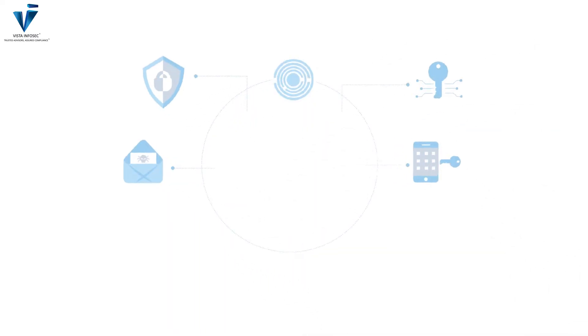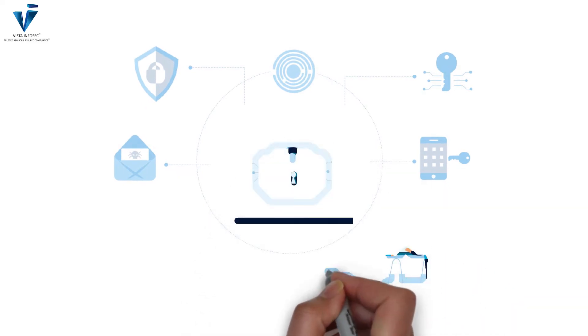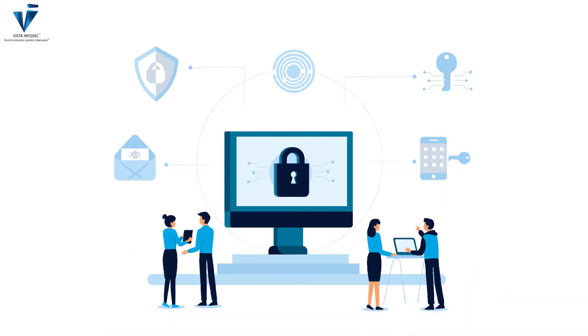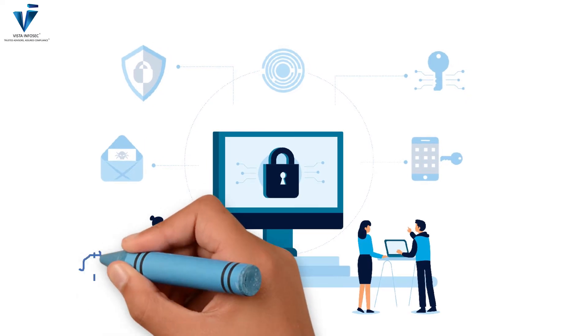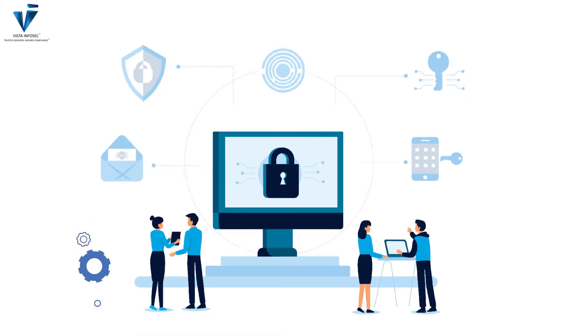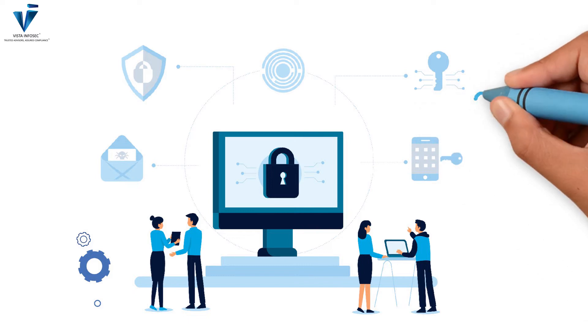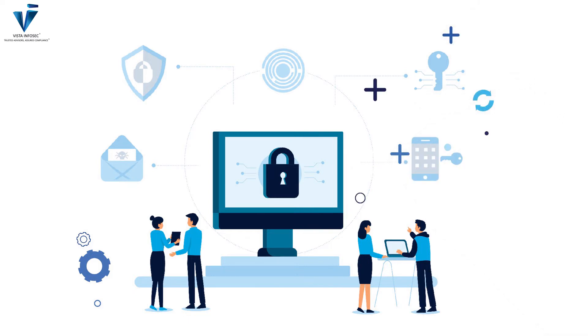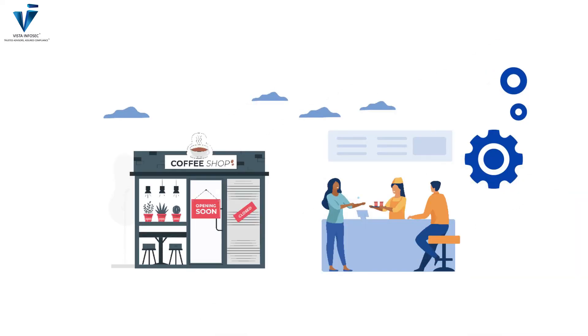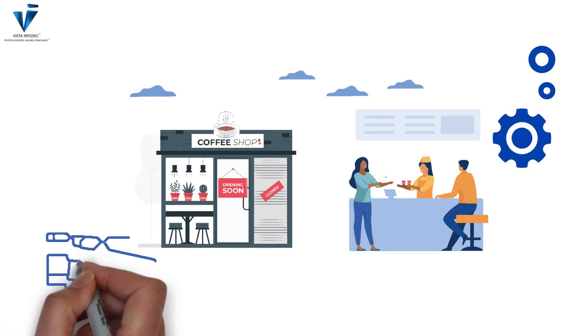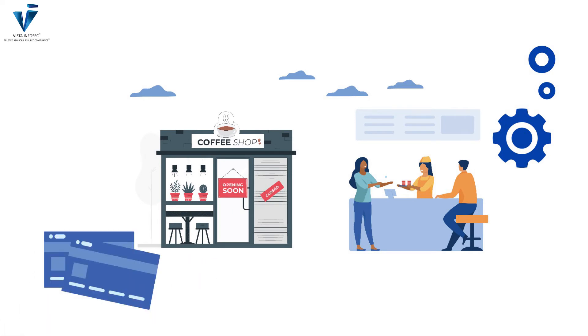Under requirement 3.3, only the first six and last four digits can be stored, processed, or transmitted for a process, technology, or application to be considered out of scope. We often see this technique used by shops and restaurants, where when customers make a card payment, the receipt offered to them has the card number masked with digits replaced by 'X' characters instead of the actual digits.